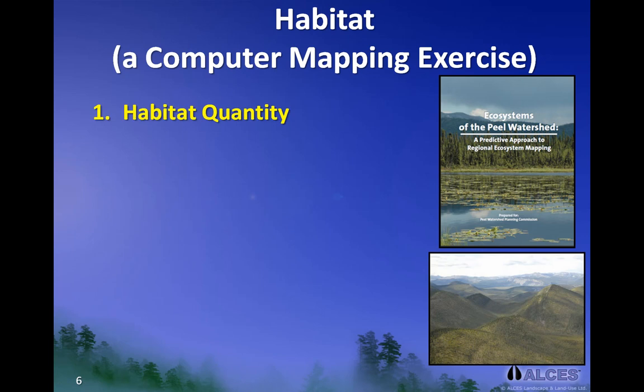To understand the quantity and quality of habitat in the study area, we used a computer mapping program called the Geographic Information System, or GIS for short, to estimate the area for each of up to 20 landscape or habitat types. Fortunately, an ecosystem mapping project for the Peel River watershed was done recently, so there was very good, reliable mapping information for the study area.